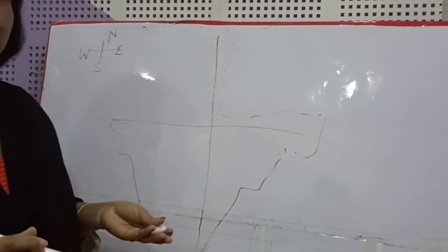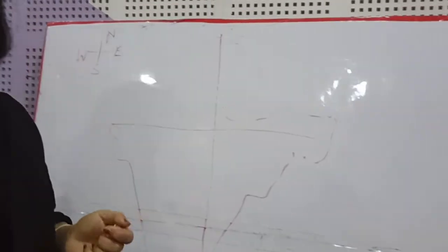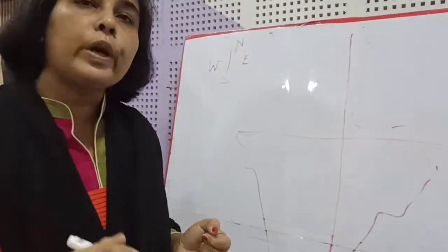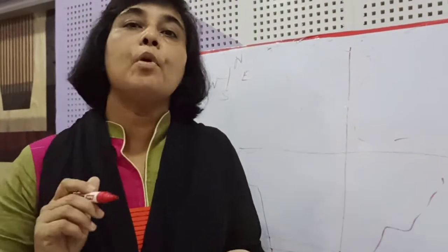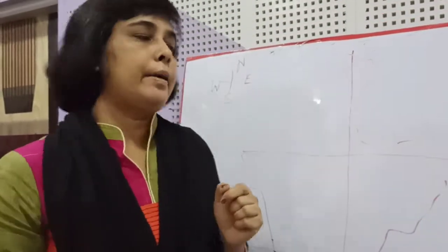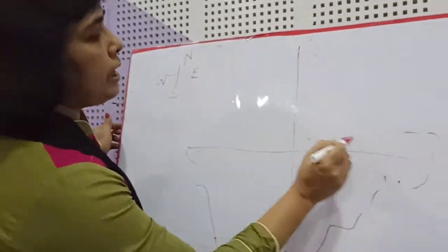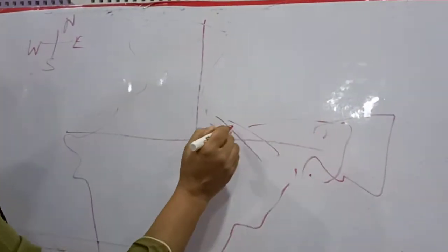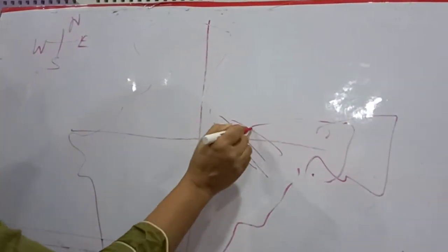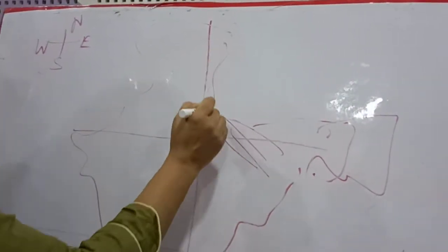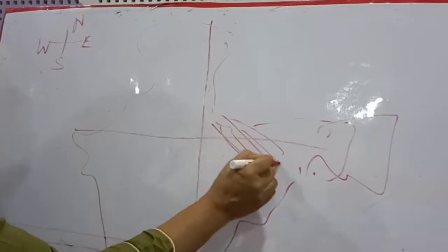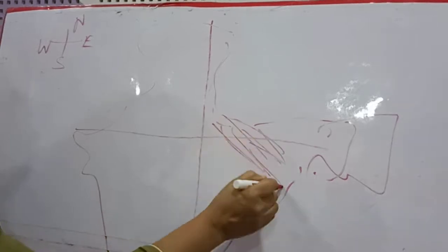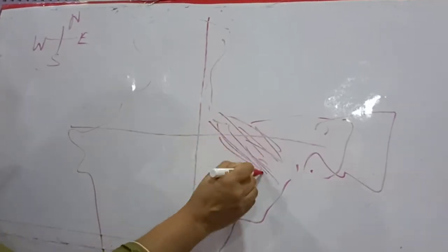Magadha is located in modern Bihar. This area is located in modern Bihar.